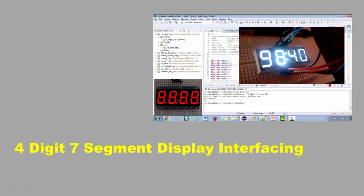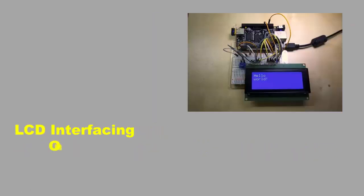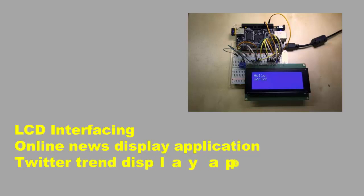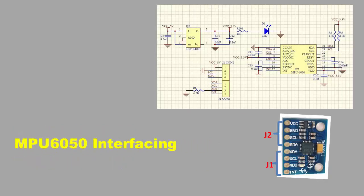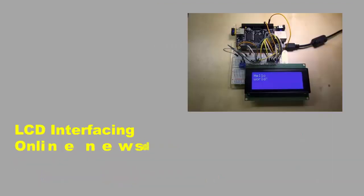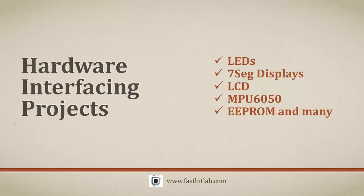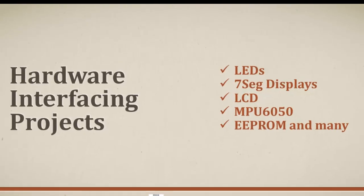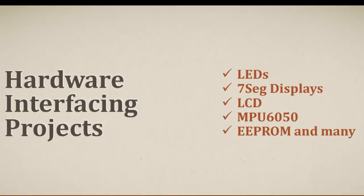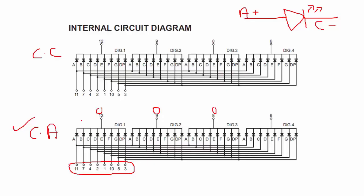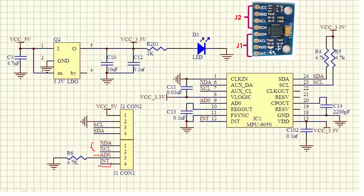Projects include seven-segment display interfacing, four-digit seven-segment display interfacing, LCD interfacing, MPU6050 accelerometer and gyroscope sensor interfacing, tilt sensing application, online news display application, Twitter trend display application, EPROM reading and writing application, and much more — all covered with step-by-step explanations. You will learn interfacing of various commonly used peripherals to the BeagleBone Black hardware.